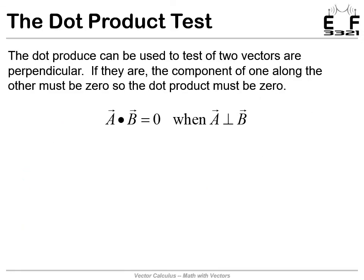The dot product has that cosine of the angle between the vectors. If those vectors are perpendicular, the dot product goes to zero because there is no component of one vector along the other. We can use this as a test to see if two vectors are perpendicular — just calculate their dot product and see if it's zero. This is done so commonly that 'dot product is zero' has become shorthand for 'they're perpendicular.' It's almost a verb now. That's called the dot product test.